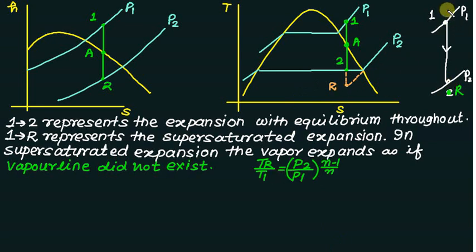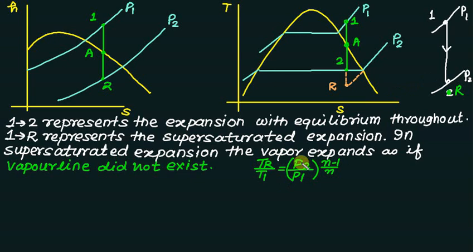Joining the equation, that is TR divided by T1 equals (P2/P1) to the power (N−1)/N. So we can very well calculate the temperature at point R using this expression, which is used for isentropic flow.